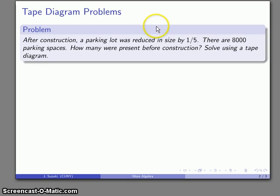After construction, a parking lot was reduced in size by one-fifth and there's 8,000 spaces remaining, and we want to find out how many were present before the construction. We'll go ahead and use this using a tape diagram, area model, bar model - the terms are pretty much interchangeable.